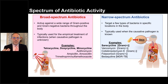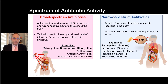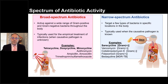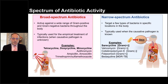Let's define spectrum of antibiotic activity. Broad-spectrum antibiotics are active against a wide range of gram-positive and gram-negative bacteria throughout the body and are often used for empirical treatment when the causative pathogen is unknown. Examples include tetracycline, doxycycline, minocycline, azithromycin, ampicillin, amoxicillin, and trimethoprim-sulfamethoxazole. Narrow-spectrum antibiotics target a few types of bacteria in specific locations and are used when the pathogen is known — examples include saracycline, targeting gram-positive bacteria, and vancomycin.